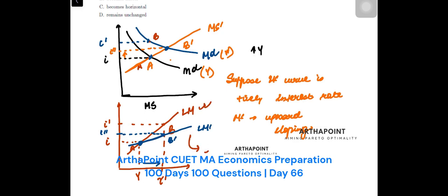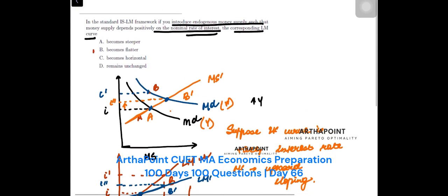This becomes your LM curve, so it is flatter right, as compared to the original LM curve. So this is flatter. Is this okay? So the LM curve becomes flatter, so the answer is B.